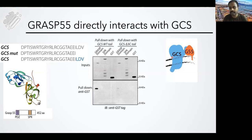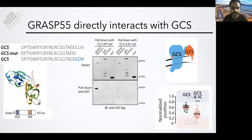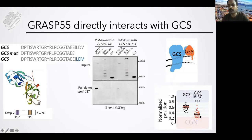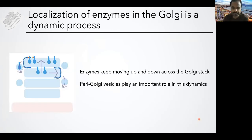What we conclude is that GCS is present on the Golgi apparatus and its C-terminus binds to the GRASP55 PDZ domain. This interaction is necessary for its localization, because if you mutate these three amino acids in GCS, it is no longer present in the trans-Golgi — it is present in the cis-Golgi, just like what happens if you remove GRASP55 from the cells.